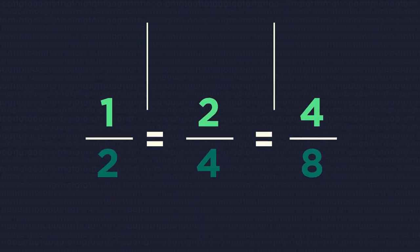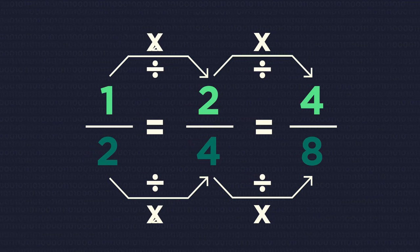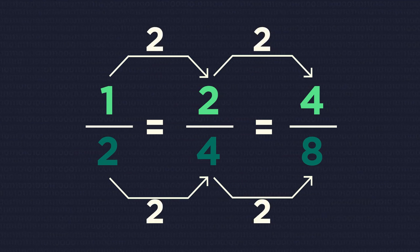So now you know. You can make equivalent fractions by multiplying or dividing the top and the bottom parts of the fraction with the same number.